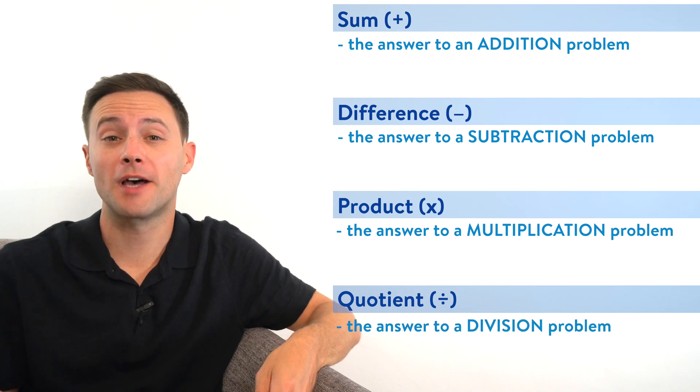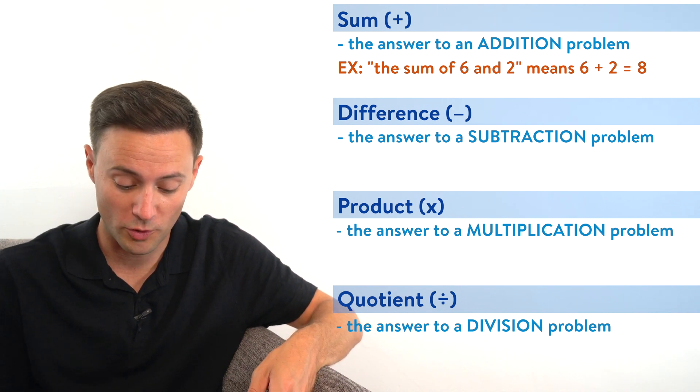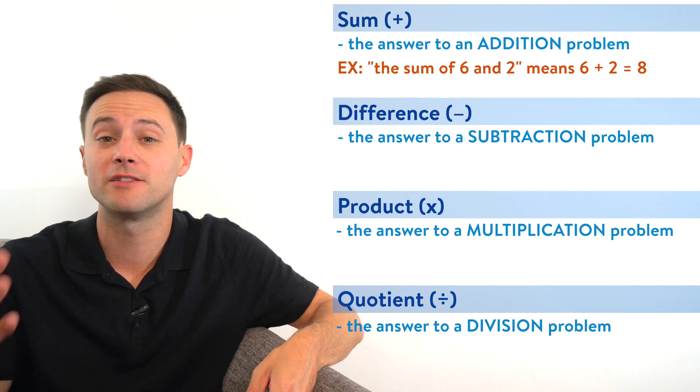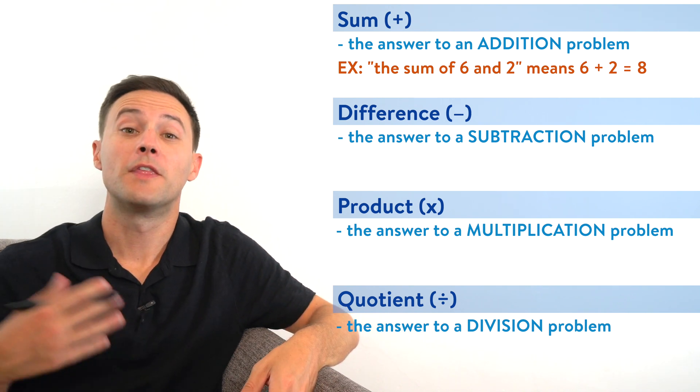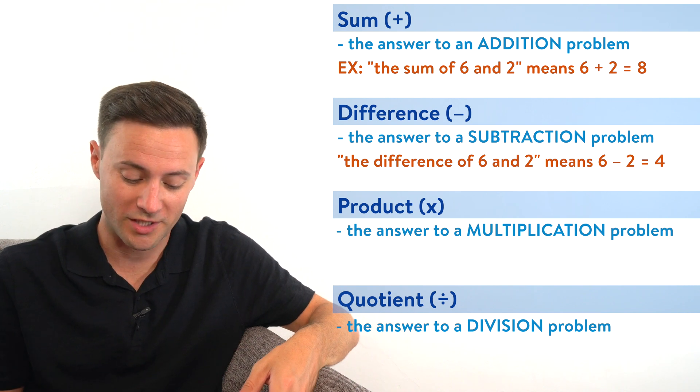And so for example, the sum of six and two, we would translate to six plus two, which would be eight. So the sum of six and two is eight. The difference of six and two would then be six minus two, which is four.